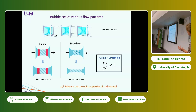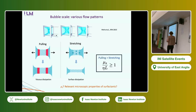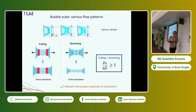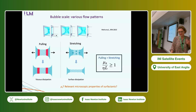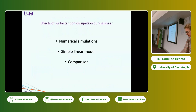We can compare both regimes using a dimensionless number called the Boussinesq number. The pooling regime dominates over the stretching regime when this number is larger than one — the system chooses the less dissipative pathway to relax. This introduces surface viscosity, but how does it connect to the microscopic properties of the surfactants? That is what we try to define here, and it is the content of this talk.